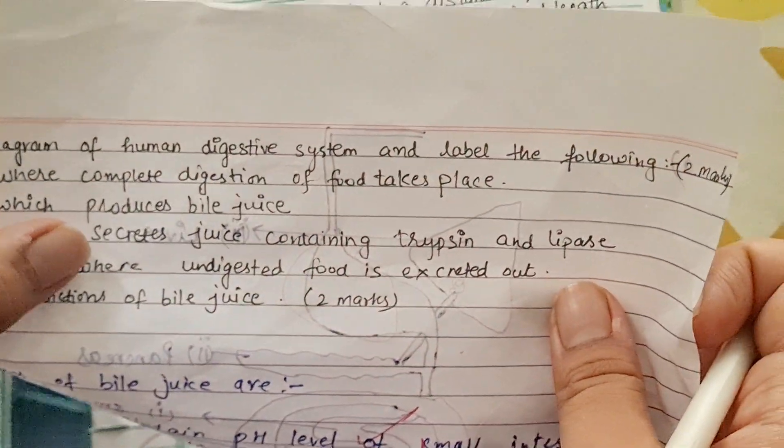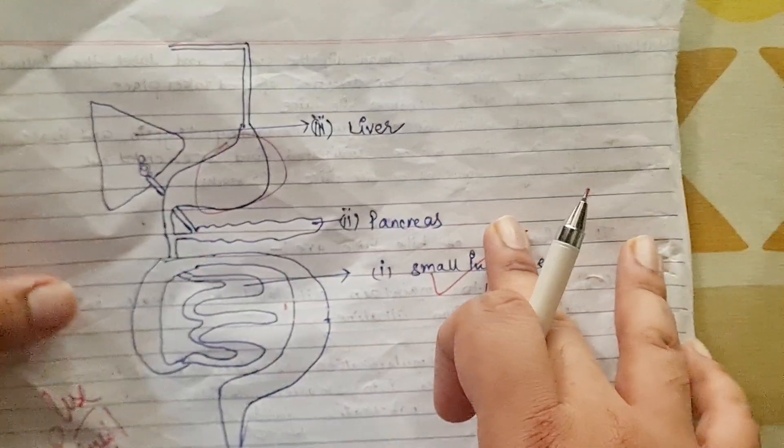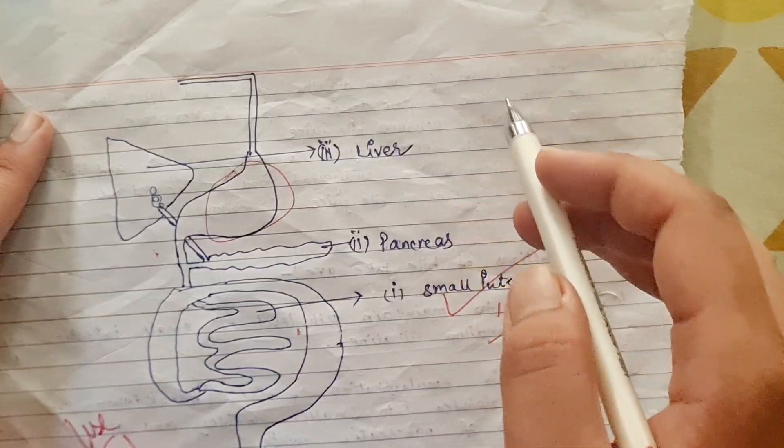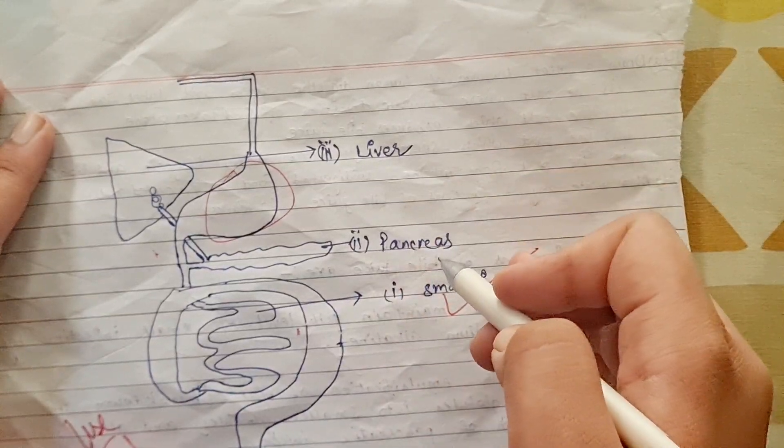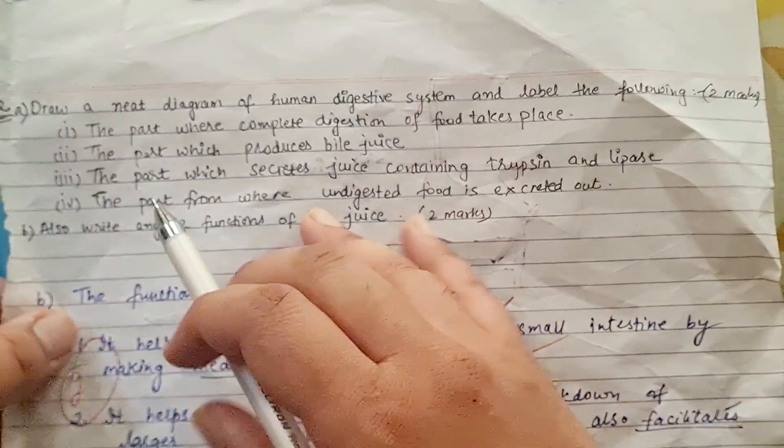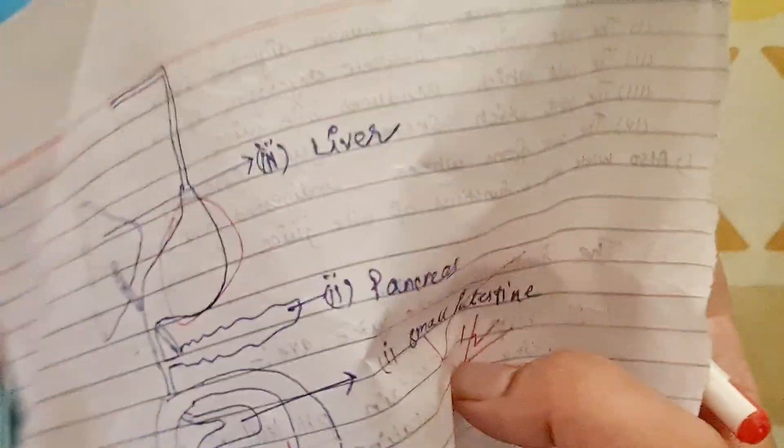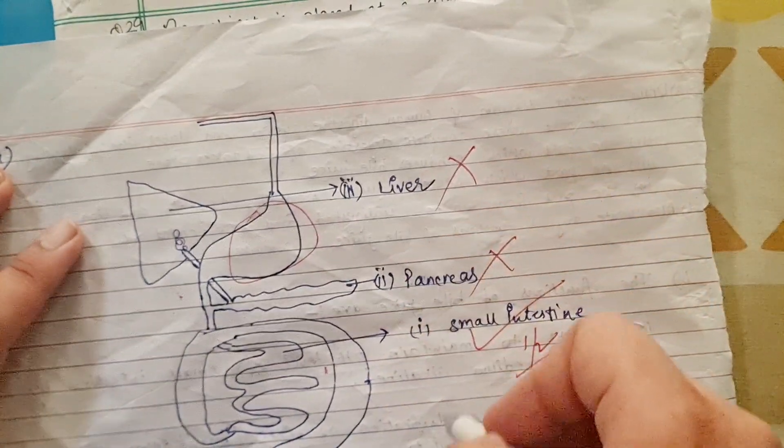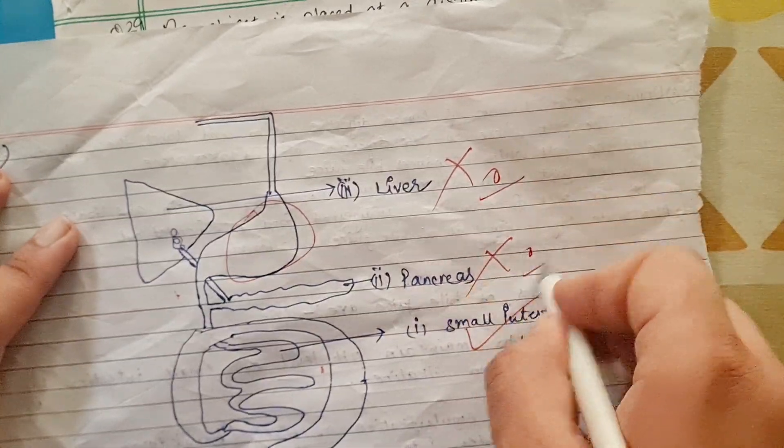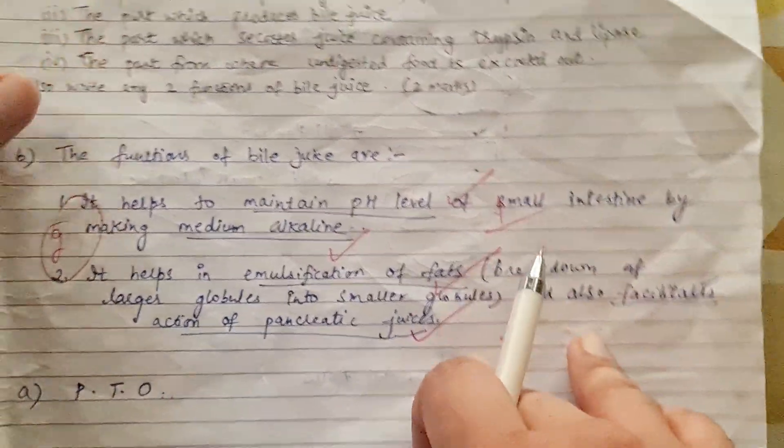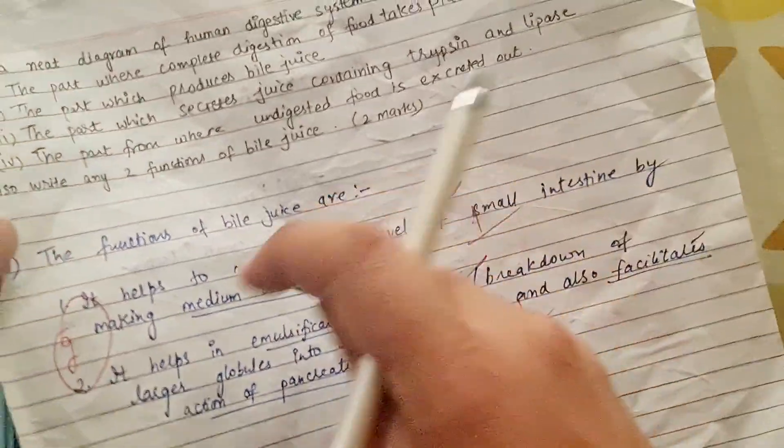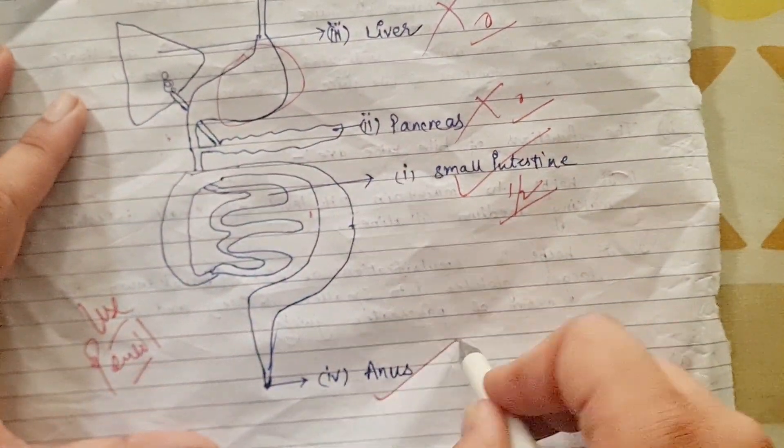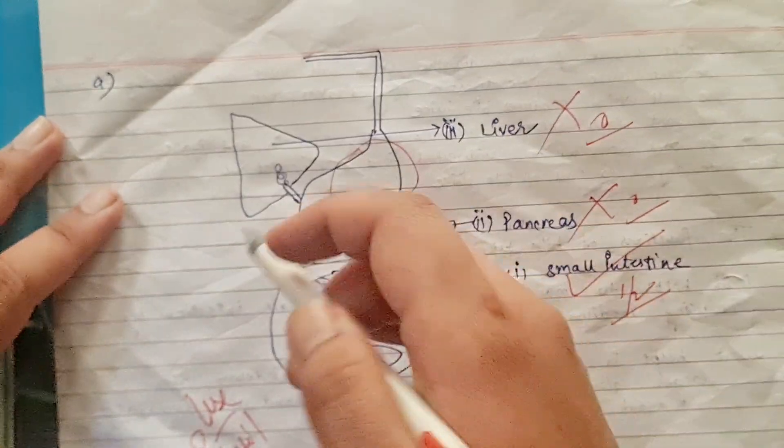Second part: which produces bile juice? This has to be liver. Third part: what is the part which secretes juice containing trypsin and lipase? That is actually pancreas. Here it is the part from where undigested food is excreted out. This is correct, anus is correct, so this is half mark.